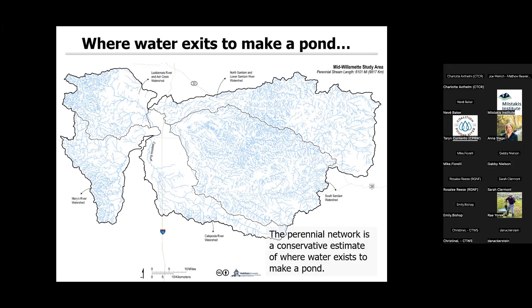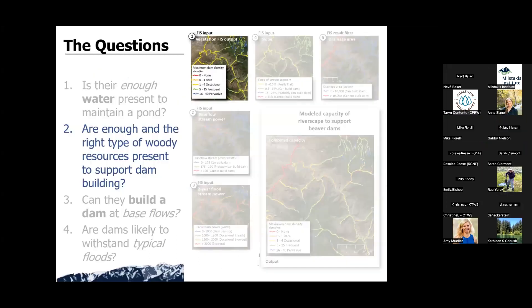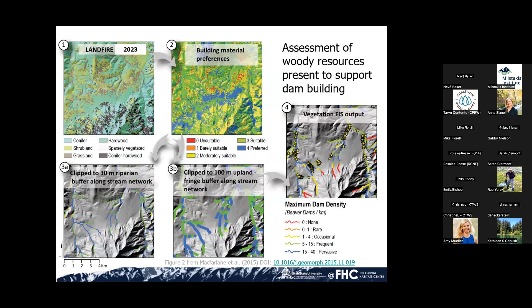Corvallis, Oregon would be in the center here, and so I'll be showing a lot of data from this project. We use the woody vegetation side of it as one input into the fuzzy inference system, and I'm going to go into a little bit more detail on this.